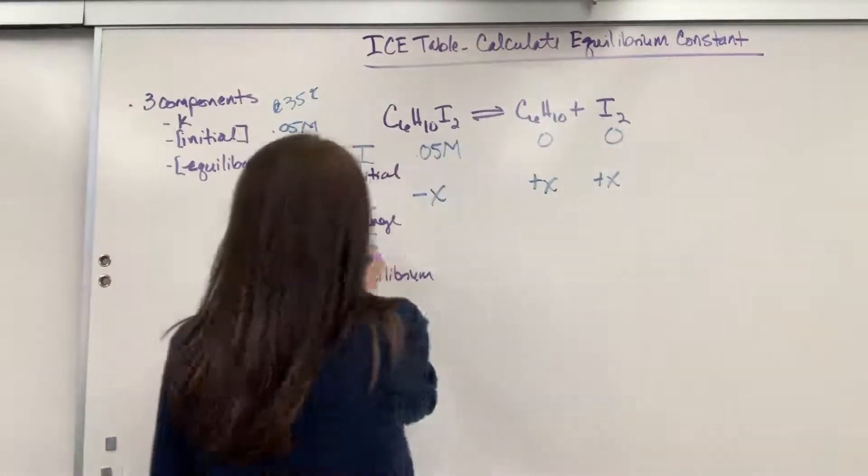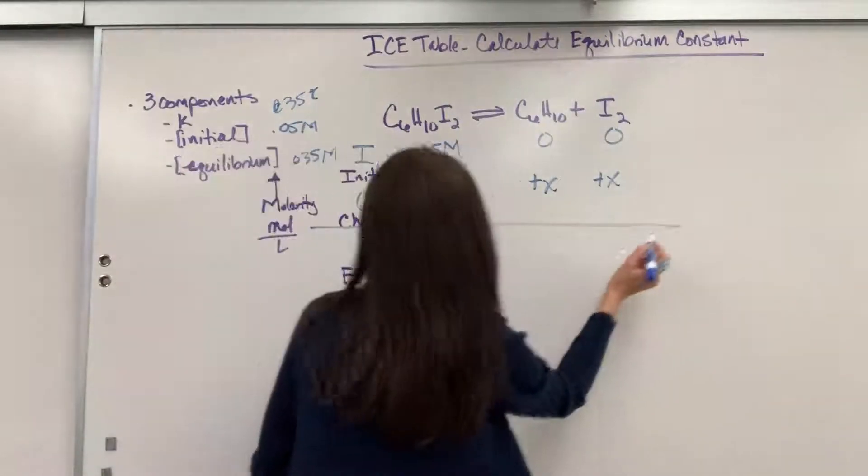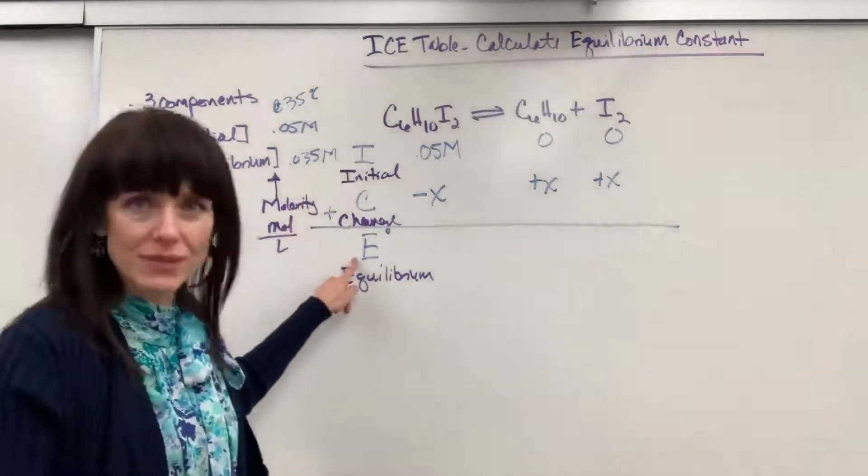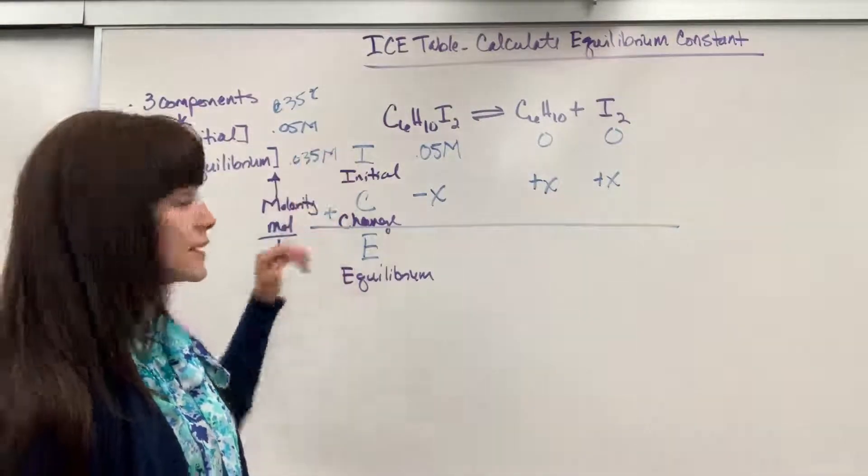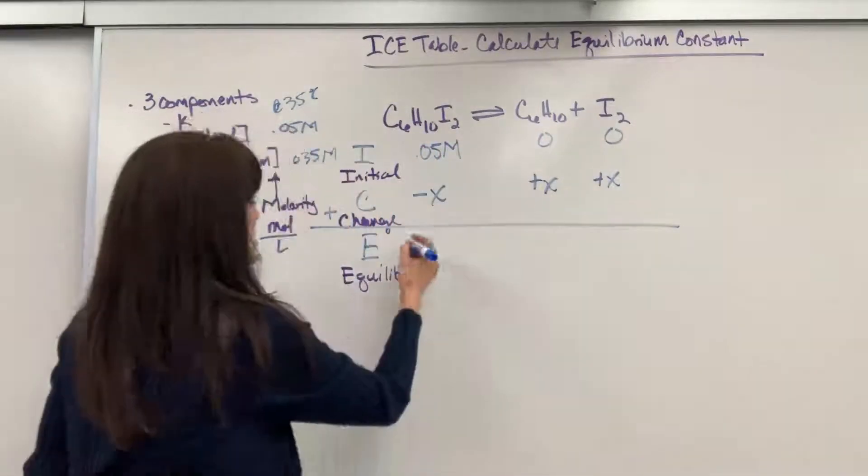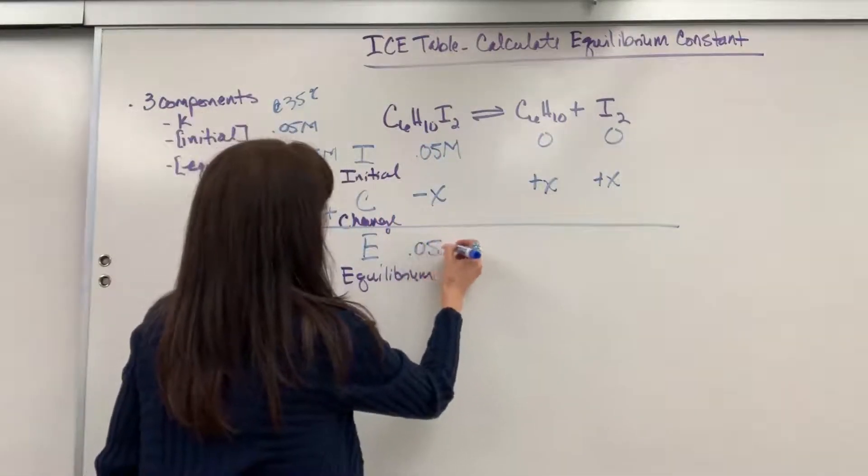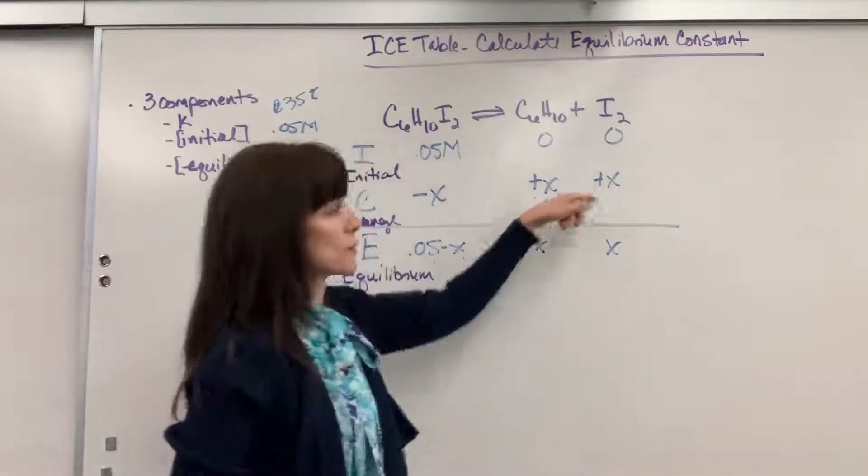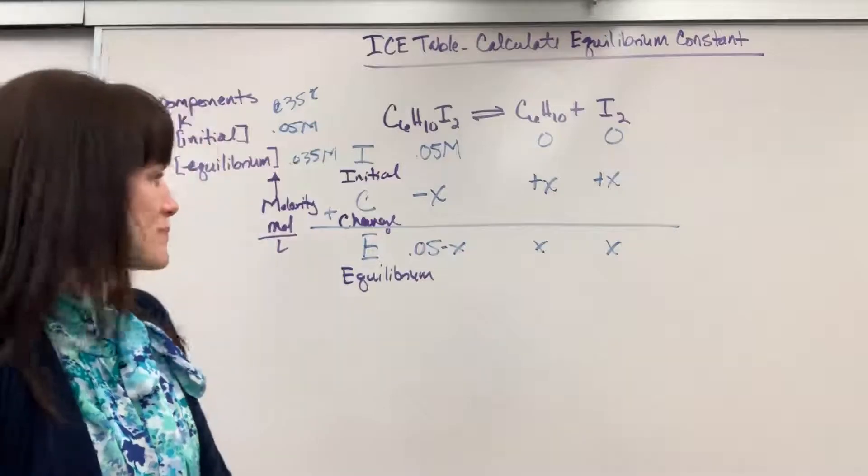E is the really easy part. So I'm going to draw a line, and all you have to do is do I plus C equals E. Let me say that again. I plus C equals E. So I'm going to add the I and the C. We're going to get 0.05 minus X, and then X and X. 0 plus X is X. 0 plus X is X.